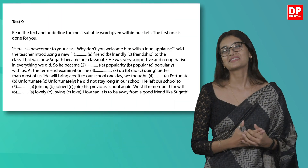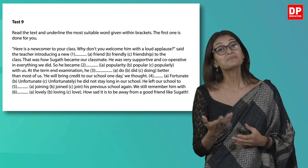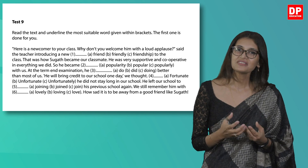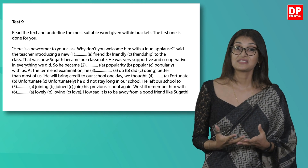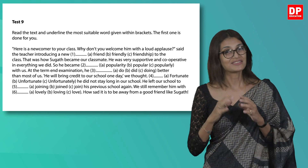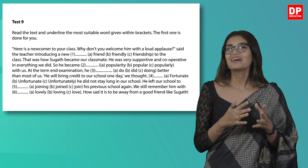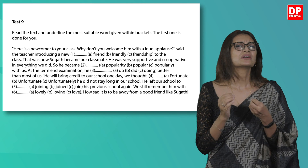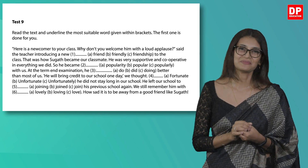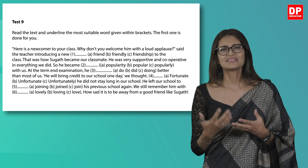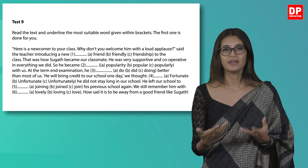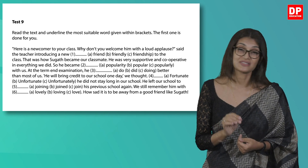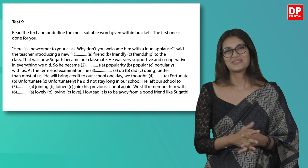Test 9. You are asked to read and underline the most suitable word given within brackets. The first one is done for you. This question is in the form of a prose text and three options of the possible answer are given for each missing word. Read the question carefully — you are supposed to underline the correct word. When you read the sentence, you will get an idea of which word, verb or noun would best suit the sentence. You will be getting five marks for this section, so let's do it together.